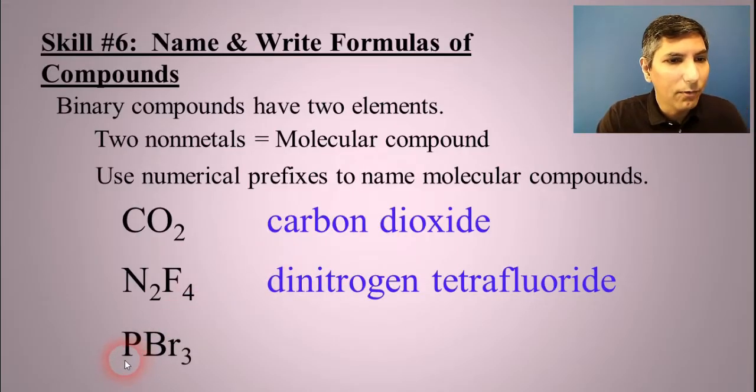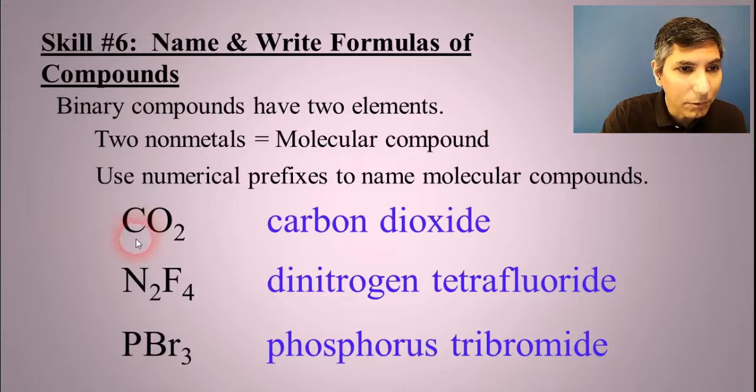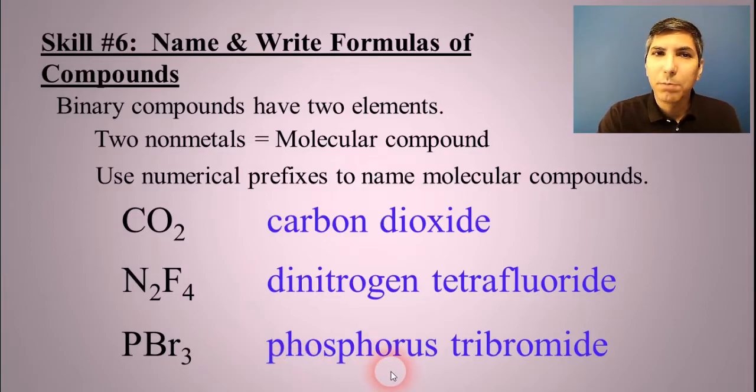This one we have phosphorus tribromide. Notice that if the first element only has one atom, like we had in the first example and in this third example, we don't say monocarbon dioxide or monophosphorus tribromide. Basically for these binary compounds, we never start the name of a compound with mono, so we just say carbon instead of monocarbon.